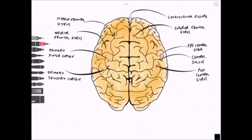The anatomical names are precentral gyrus and postcentral gyrus, but the functional names are primary motor cortex and primary sensory cortex. The primary motor cortex is in the frontal lobe, and the primary sensory cortex is in the parietal lobe. Posterior to that we have the superior parietal lobule, which is back in the parietal lobe, and that finishes this video.